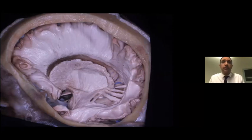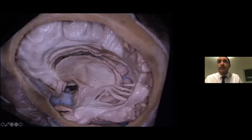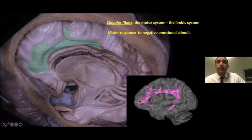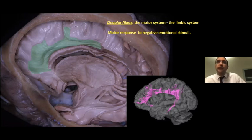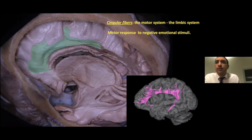Proceeding more medially, we reach the callosal fibers that form the roof of the ventricle. We see the caudate nucleus, caudate head, and internal capsule fibers. We dissected the callosal fibers that form the roof of the ventricle and run towards the opposite sides. After dissecting the cingulum, more medially we see the cingulate fibers, which originate from the cingulum and are distributed to the SMA complex and prefrontal cortex on the medial side. Functionally, these are connections between the motor system and the limbic system, responsible for motor responses to specific negative emotional stimuli.